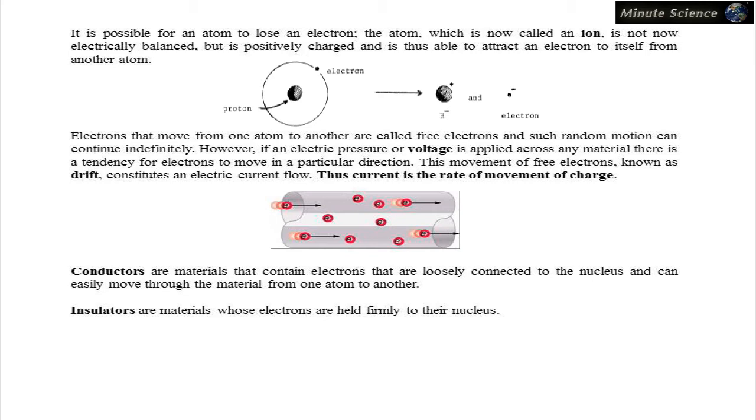Electrons that move from one atom to another are called free electrons and such random motion can continue indefinitely. However, if an electric pressure or voltage is applied across any material, there is a tendency for electrons to move in a particular direction. This movement of free electrons, known as drift, constitutes an electric current flow. Thus, current is the rate of movement of charge.